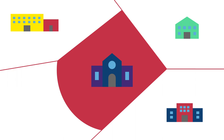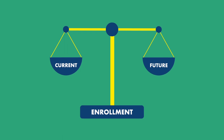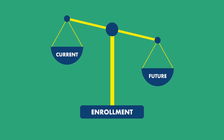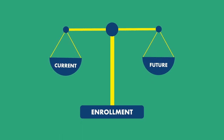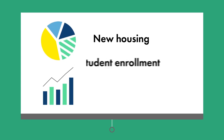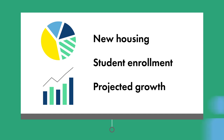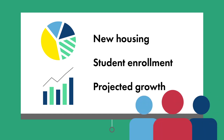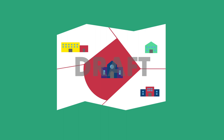Our district follows a specific process when considering boundary changes, and changes are designed to balance enrollment based on current and future enrollment. Data, such as new housing, student enrollment, and projected growth is reviewed, and school leaders are consulted. This information is used to draw draft maps for new boundary areas.